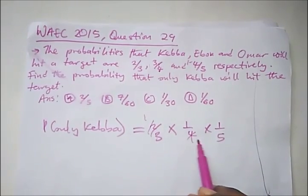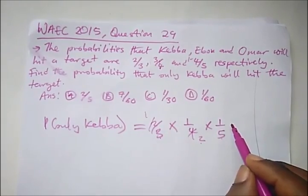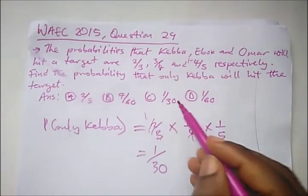So here, we cancel, this will cancel here 1, this will cancel 2. We have 3 times 2, 6 times 5, that would be 30. So 1 over 30. That's option C.